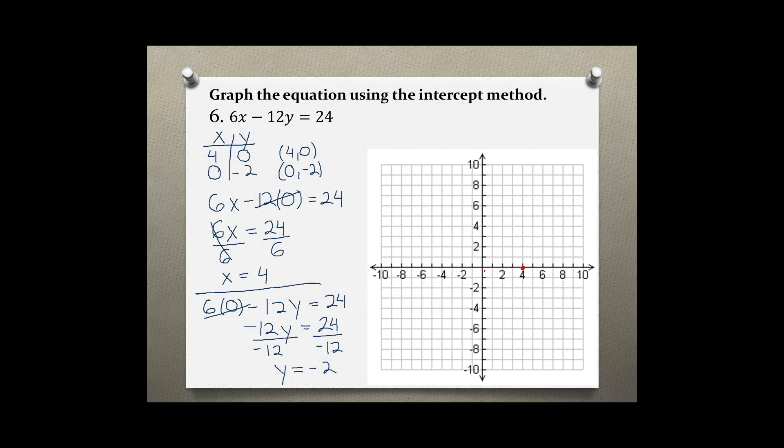So we have negative 2 right here, and our y-intercept is at 0 on the x-axis and negative 2 on the y. Connecting these two points we get our equation. Thank you.